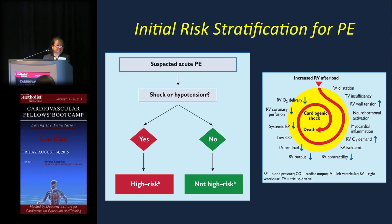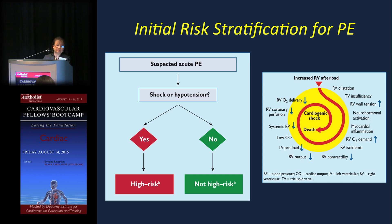When you suspect PE, ask yourself: is the patient in shock or not? If there's a shock component — hypotension, end-organ dysfunction — then you have a high-risk patient; otherwise, not high-risk. What you're trying to determine is whether the RV is so strained that it's in danger of spiraling into RV failure — from RV dilatation to tricuspid valve involvement, decreasing contractility, decreased oxygen delivery, cardiogenic shock, and death.